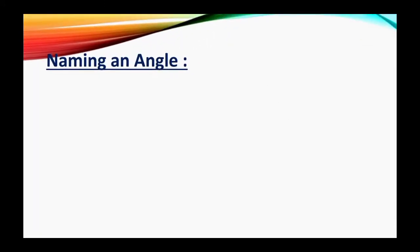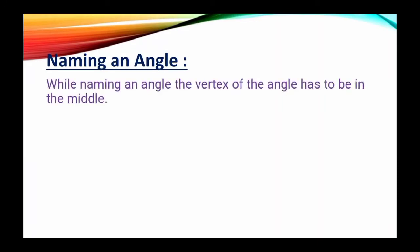Now come to naming an angle. How to name an angle? While naming an angle, the vertex of the angle has to be in the middle. While we are writing any name of an angle, we have to put the letter that is in place of vertex in the middle of the other two letters.